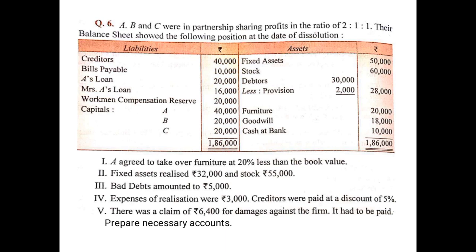Then you have the capital balances of A, B and C. A separate partner's capital account needs to be prepared. Since the balances are shown on the liabilities side, they are credit balances. Therefore, they will be written on the credit side as by balance brought down — A: 40,000, B: 20,000 and C: 20,000.